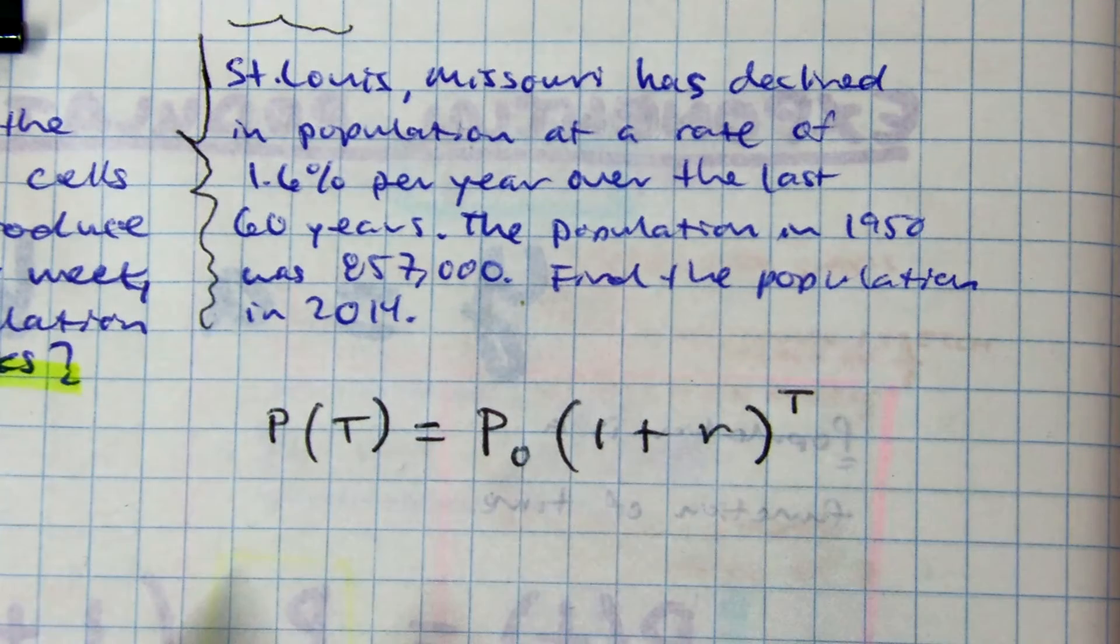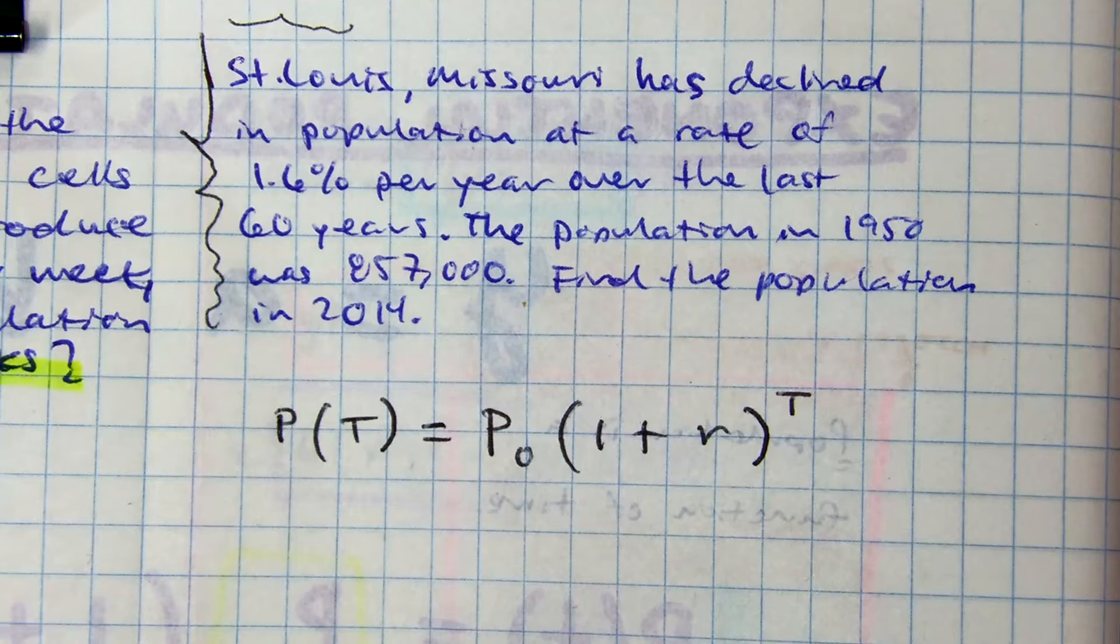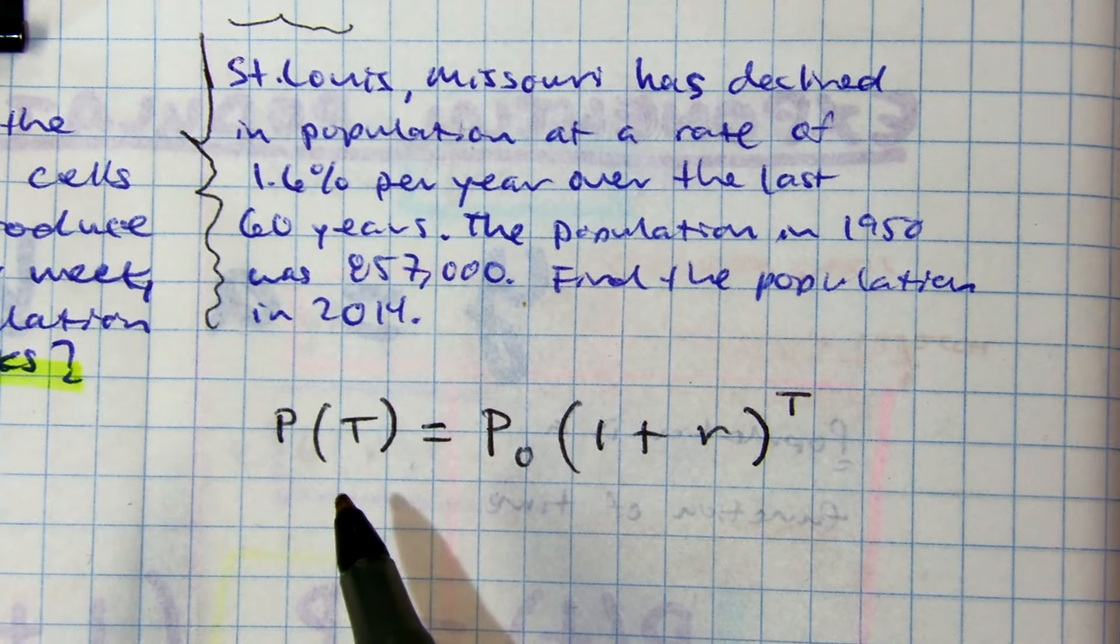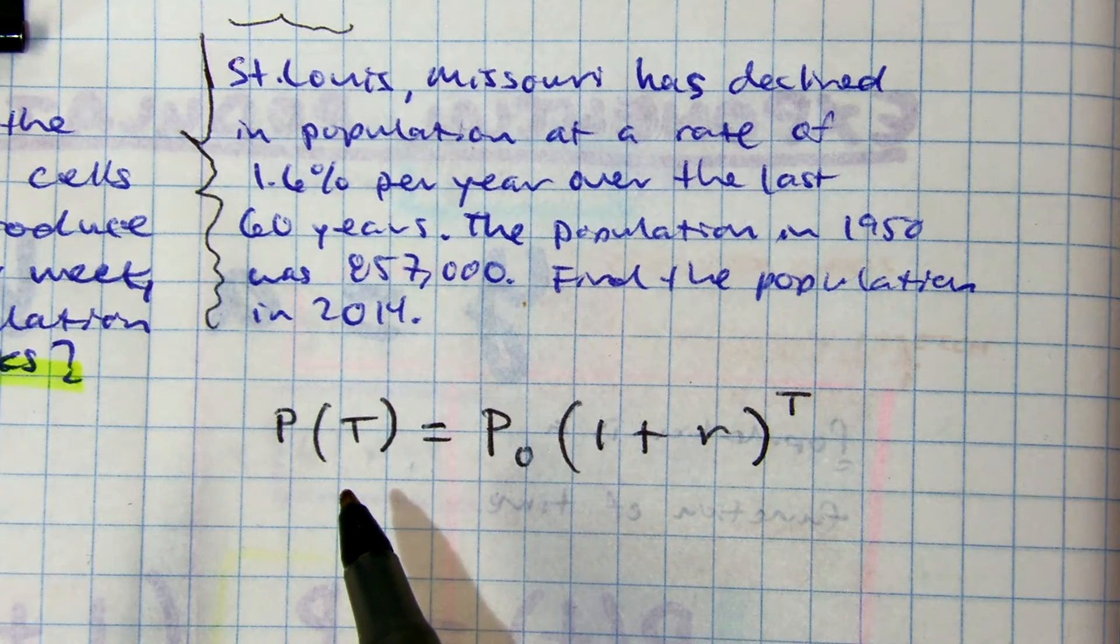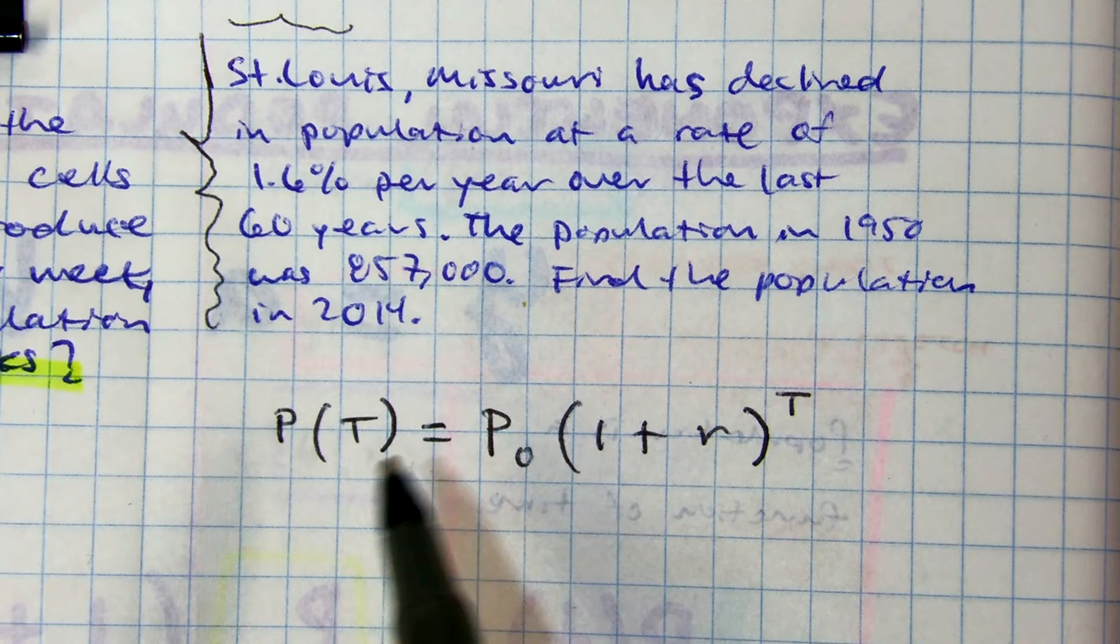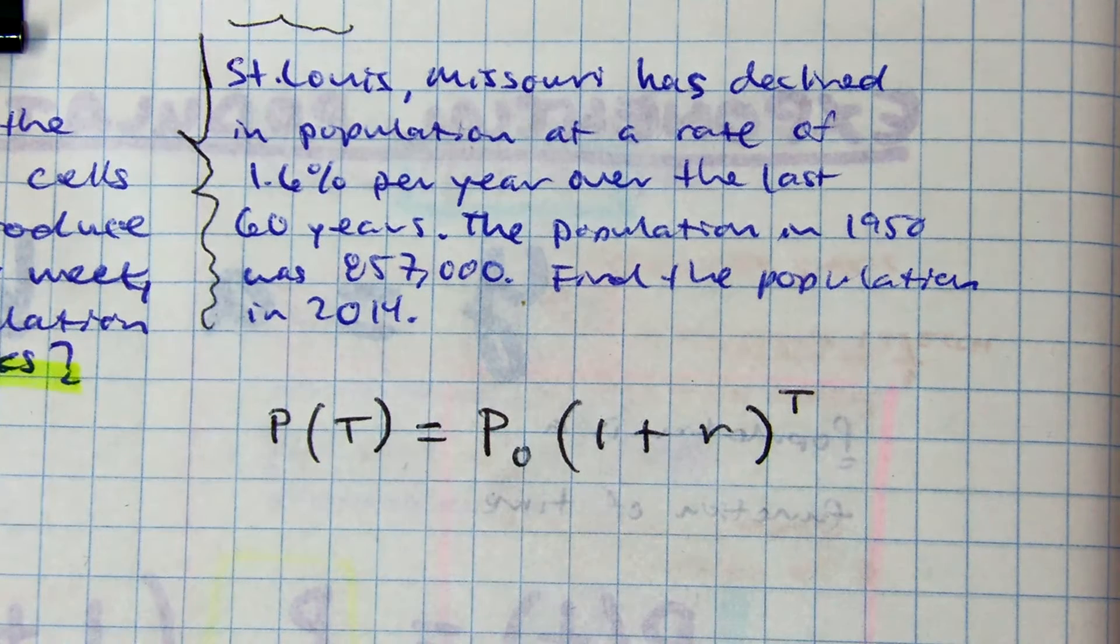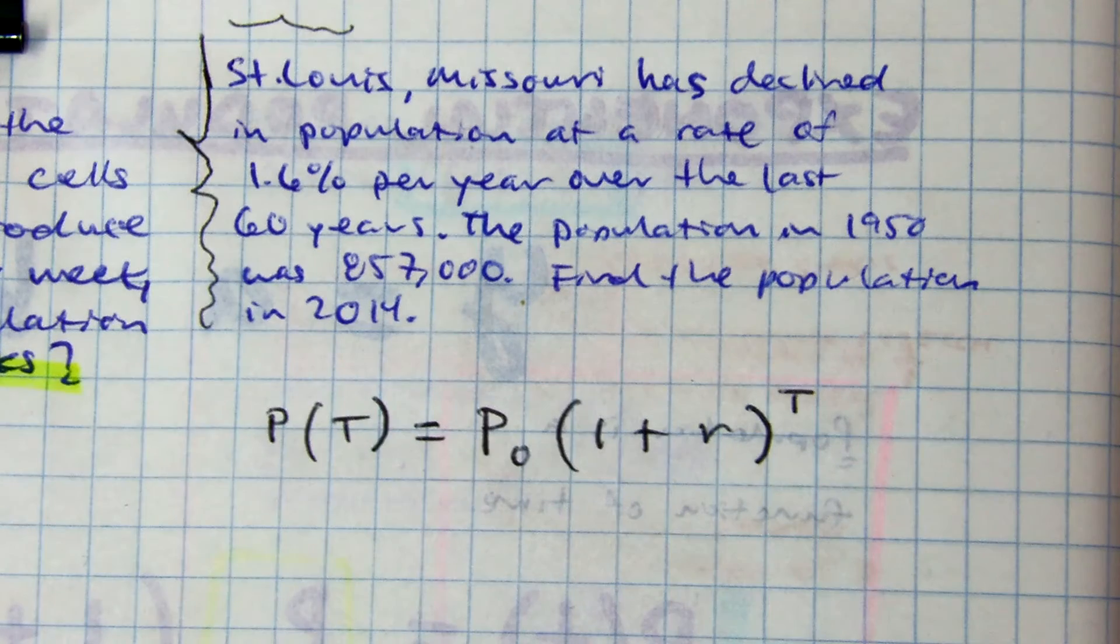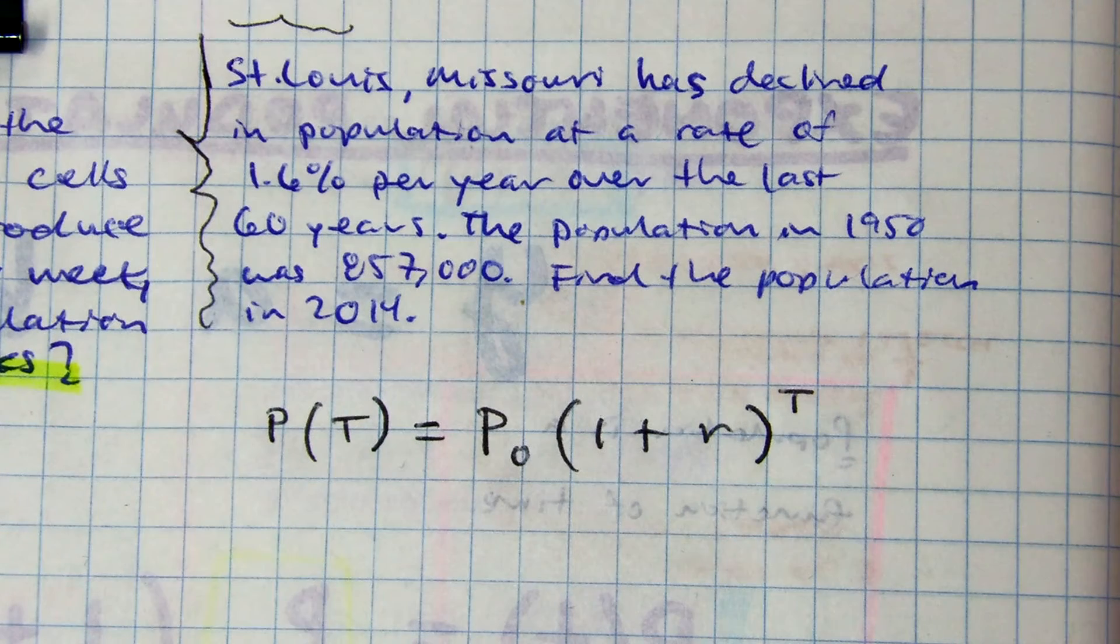Partner A, tell partner B, what's your T value? Your choices are 60, 64, or 2014. Raise your hand 60, raise your hand 64, raise your hand 2014.